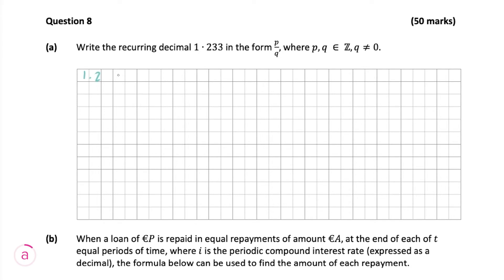It's going to be 1.2 plus 0.03 plus 0.003 plus 0.0003 and so on. Now this looks very similar to a geometric sequence — as you can see there's a common ratio here of 0.1, and that'll continue on down through the sequence.